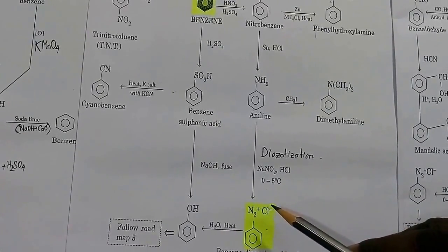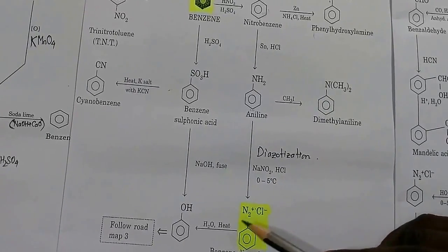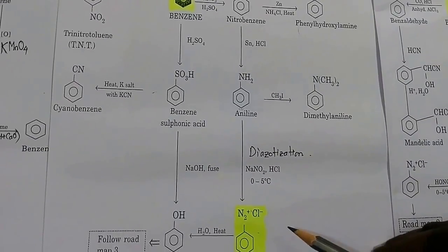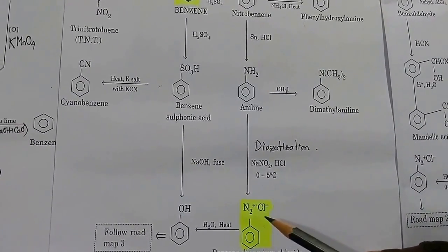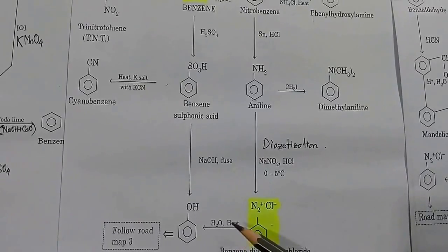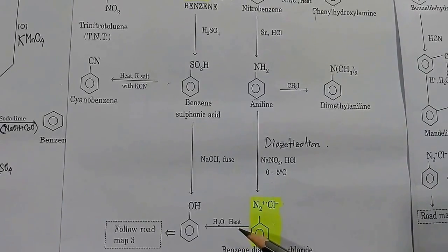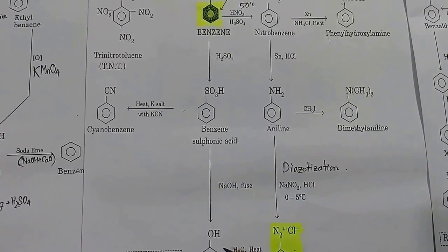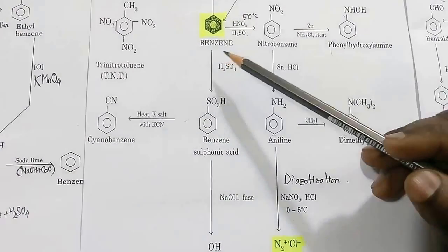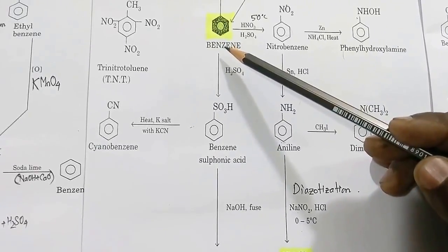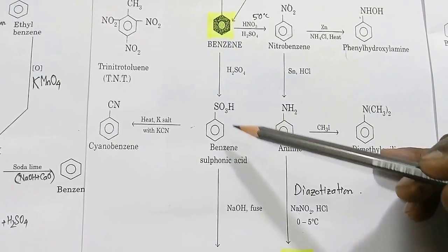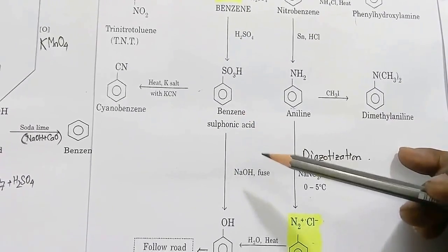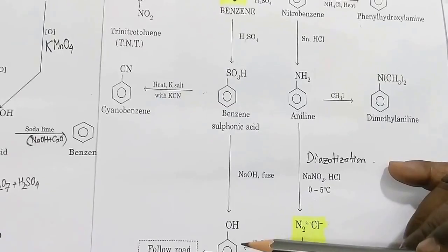Benzene diazonium chloride can be used for the preparation of a large number of organic compounds. When treated with water and heat, you get phenol. Phenol can also be obtained by another route: benzene → sulfonation → benzene sulfonic acid, and benzene sulfonic acid can be fused with NaOH to get phenol.